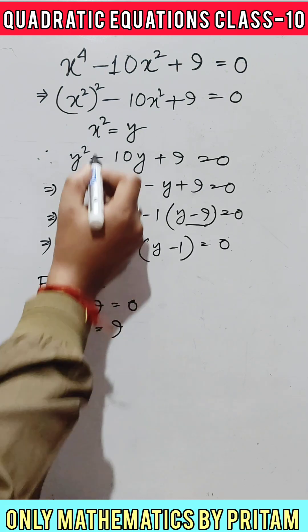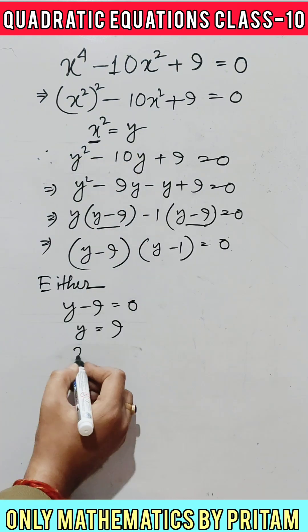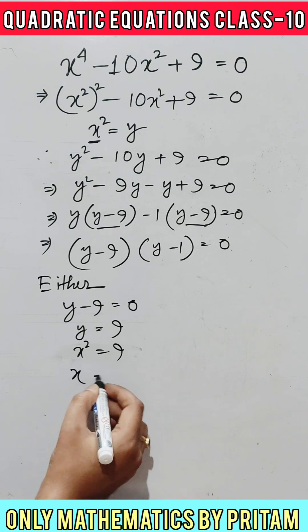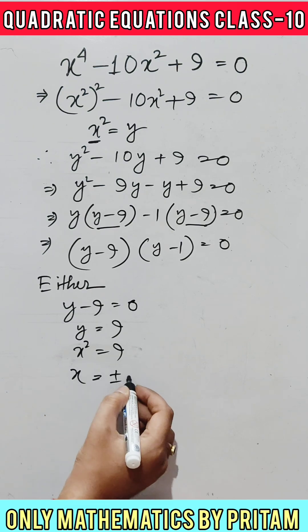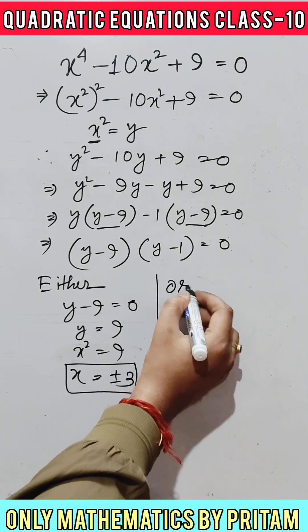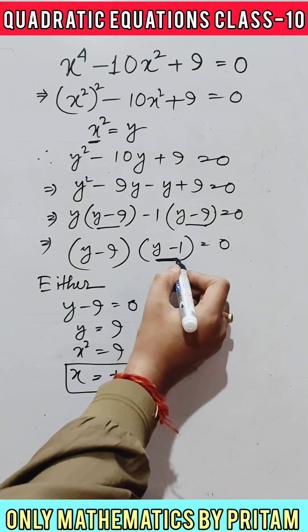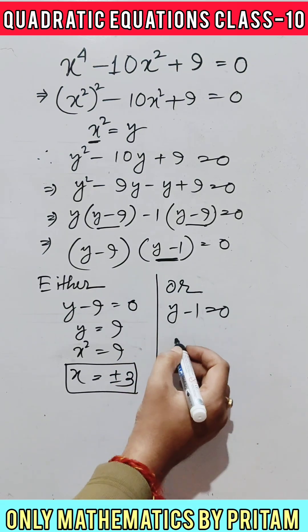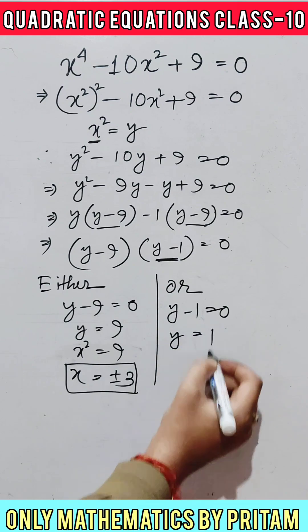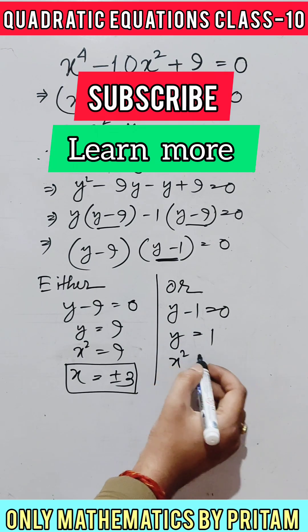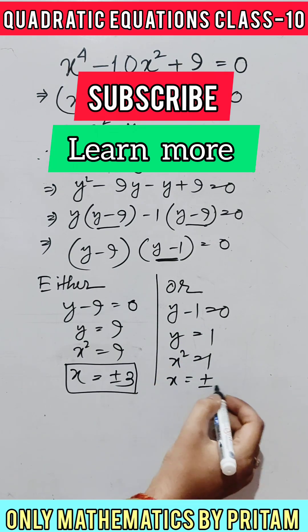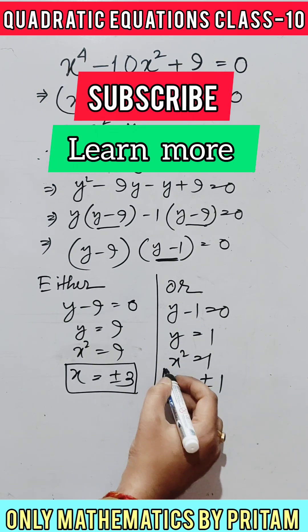Now either y minus 9 equals 0, so y equals 9. Since y is x squared, x squared equals 9, so x equals plus or minus 3. Or y minus 1 equals 0, so y equals 1, meaning x squared equals 1, so x equals plus or minus 1.